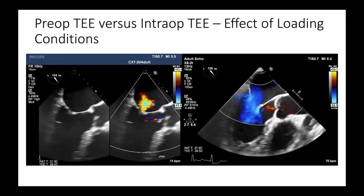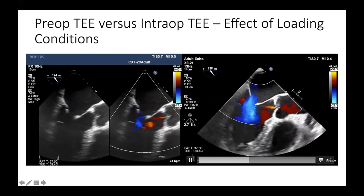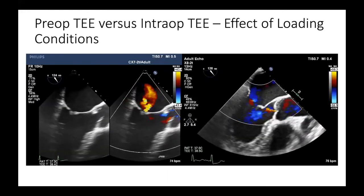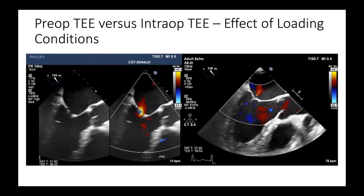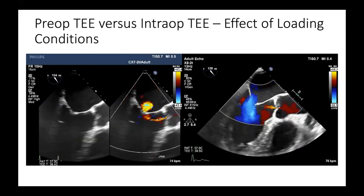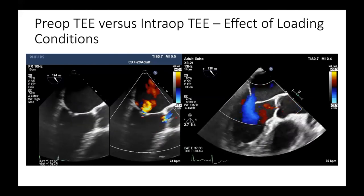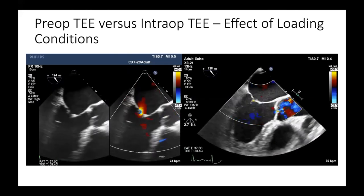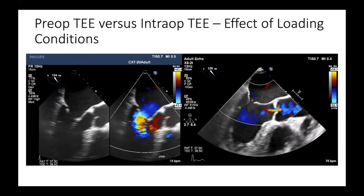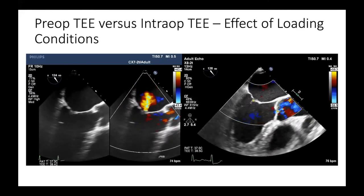Now you're seeing the pre-op TEE versus the intra-op TEE, which highlights the effect of loading conditions. The grading of MR severity can be significantly impacted by hemodynamic changes, particularly blood pressure. Hemodynamic variation can be seen with conscious sedation during TEE, but it's very challenging in the operating room due to anesthesia and vasoactive agents. You commonly encounter intra-op decrease in loading conditions or contractility, which leads to underestimation of your MR. If this patient had no pre-op echo, we may not have commented on the mitral regurgitation. This is why in functional MR we judge on pre-op TTE and look at the TEE for pathology, whereas for primary MR there's not that big a difference.